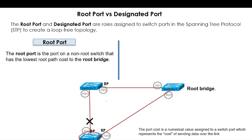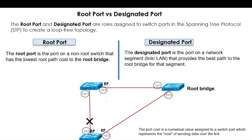We select the root port on the basis of this criterion. Now for the designated port, the designated port is the port on a network segment — or LAN segment or link. Here we have two switches and between them a segment or link called a LAN segment. On every LAN segment we will have one port which acts as a designated port, and it will have the best path — meaning the lowest root path cost to reach the root bridge.